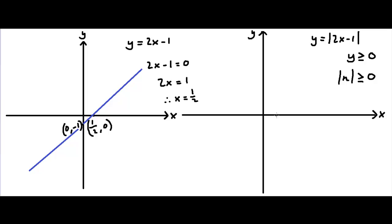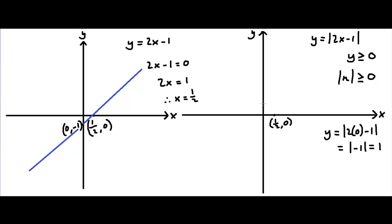So what I'm going to do is put the point (1/2, 0) over here. And I'm also going to figure out what y is when x is 0. When x is 0, y equals the absolute value of 2 multiplied by 0 minus 1, which equals the absolute value of minus 1, which equals 1. So when x is 0, y is now 1.